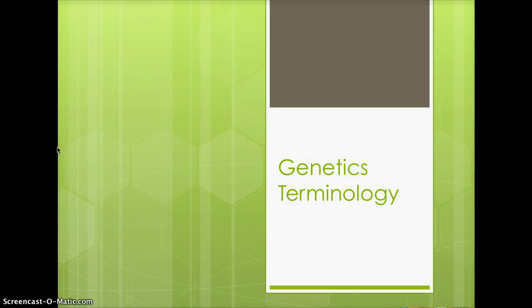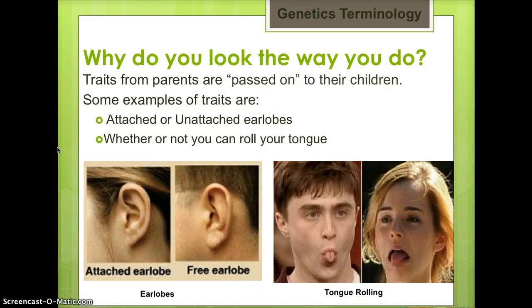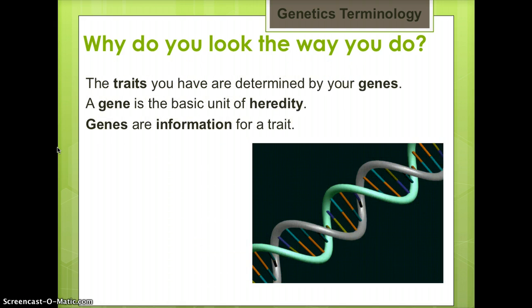This video reviews genetics terminology. Why do you look the way you do? Traits from parents are passed on to their children. Some examples of traits are attached or unattached earlobes, and whether or not you can roll your tongue. The traits you have are determined by your genes. A gene is the basic unit of heredity.